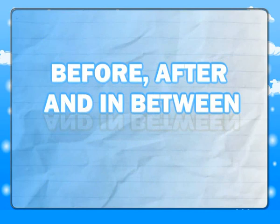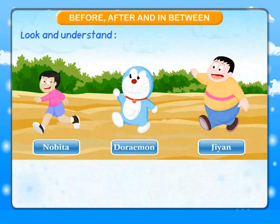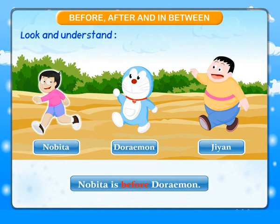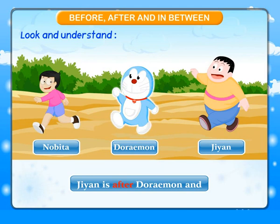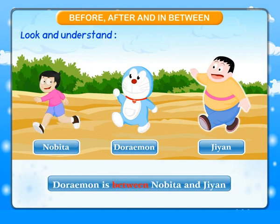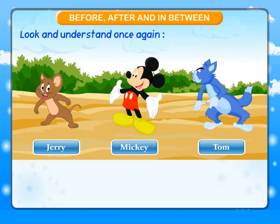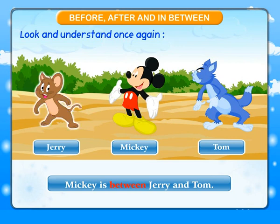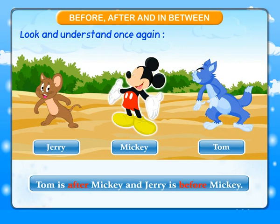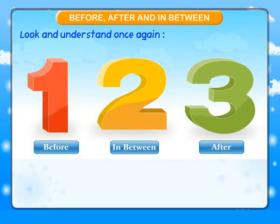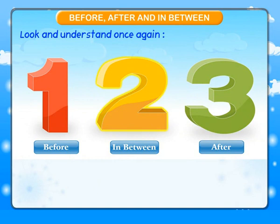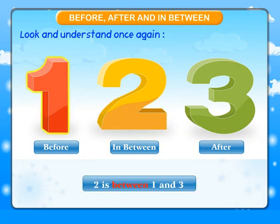Before, after and in between. Look and understand. Nobita is before Dorymon. Jiyan is after Dorymon. And Dorymon is between Nobita and Jiyan. Mickey is between Jerry and Tom. Tom is after Mickey. And Jerry is before Mickey. 1 is before 2; 2 is between 1 and 3; 3 is after 2.